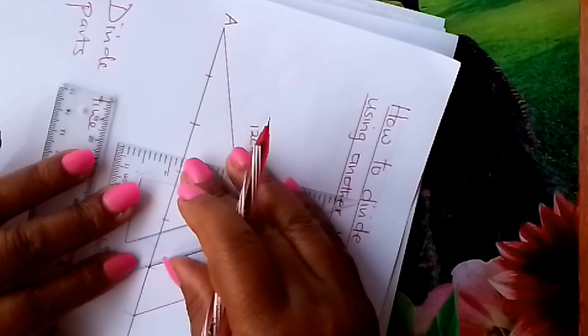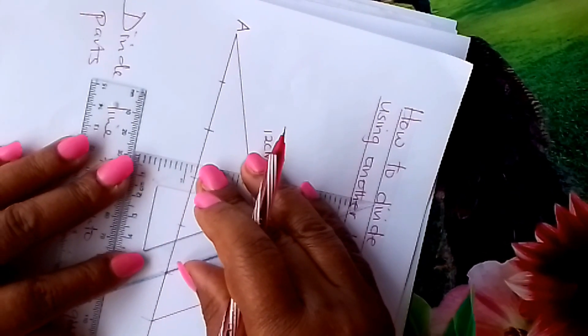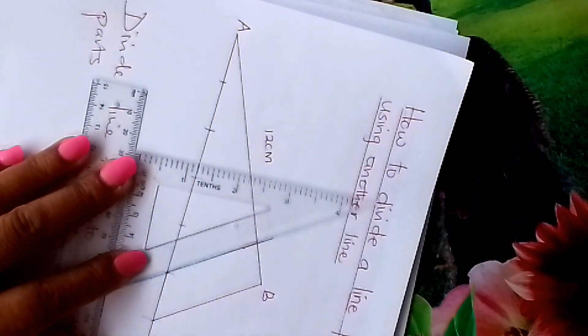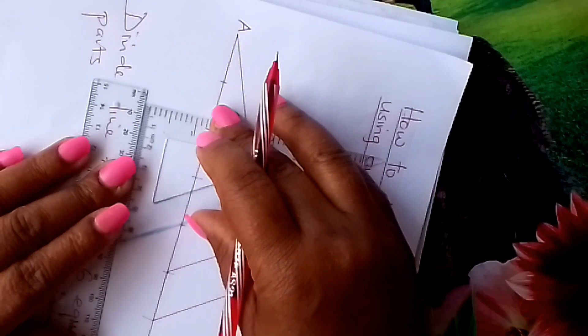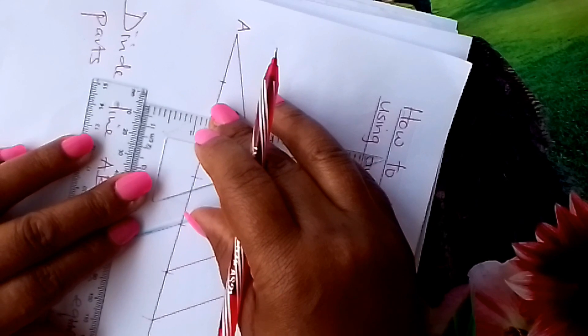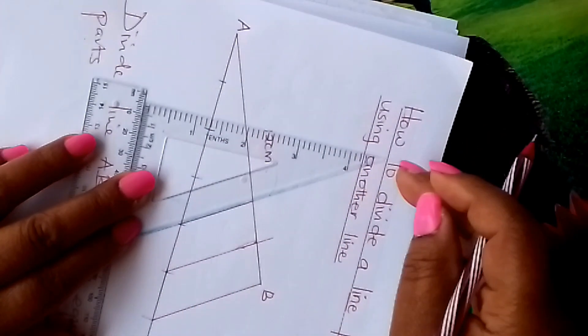Then we move again. We are doing parallel lines. You fix your set square like that. You move again uniformly. Once you get to that, you draw another line like that.